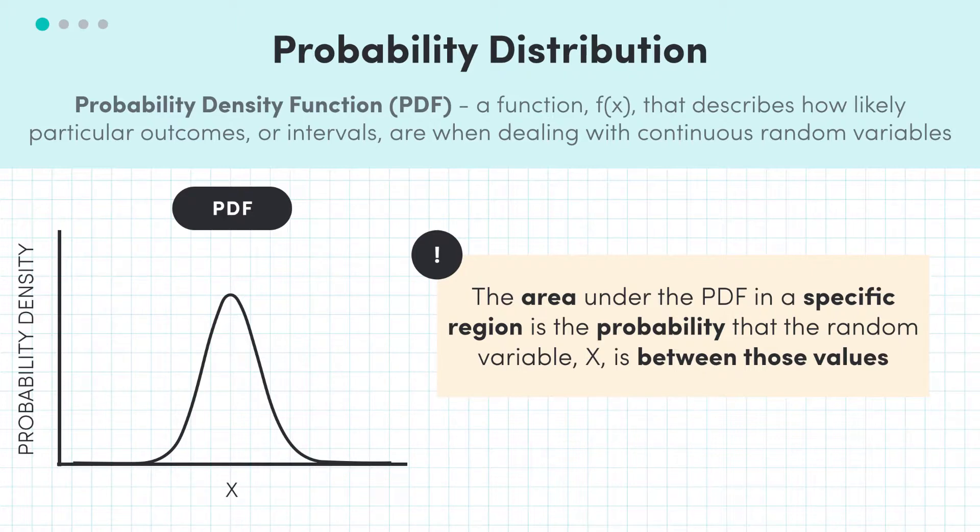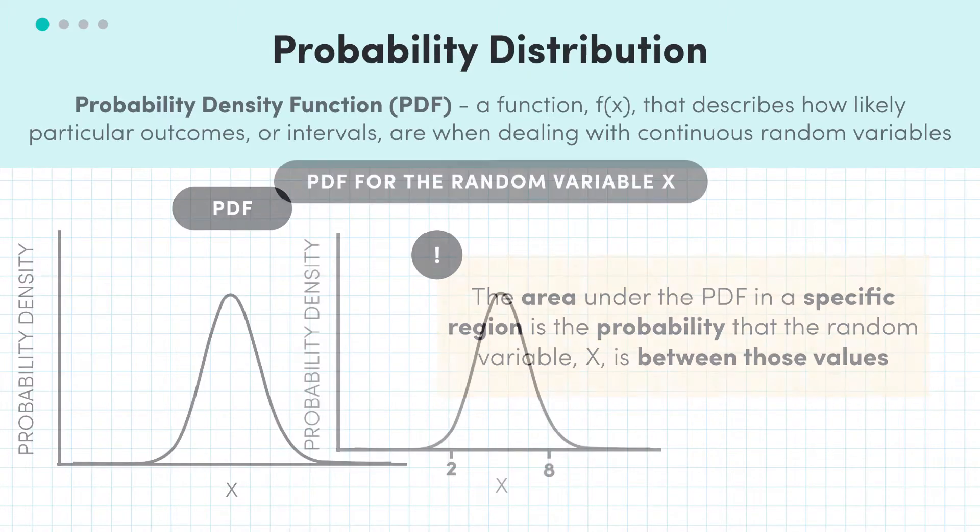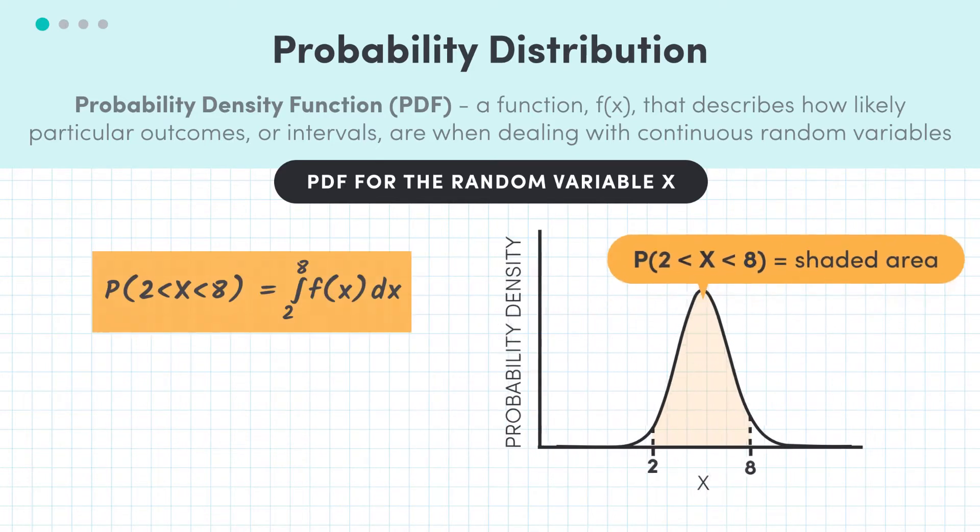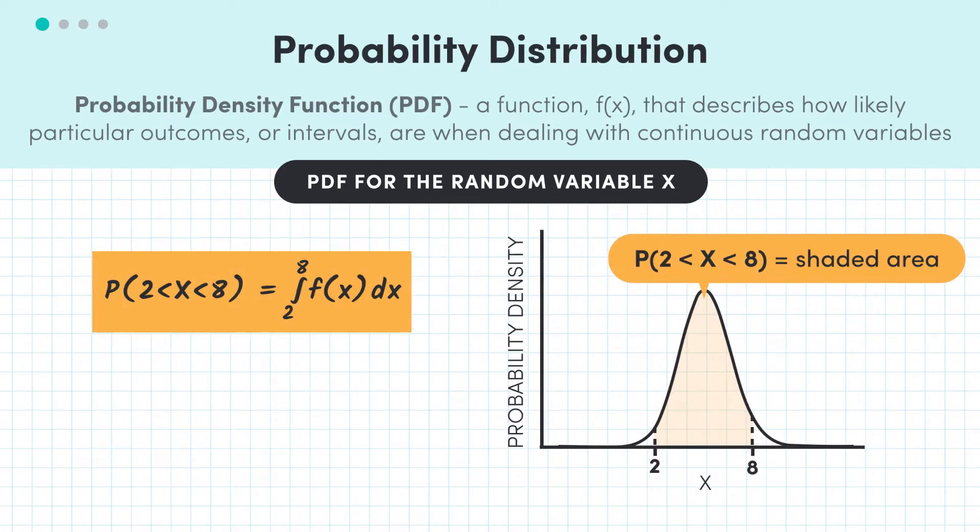So for example, say for a particular random variable X, the PDF looked like this. Then the probability that our random variable X is between 2 and 8 is exactly this area. So formally, the way that we would write that mathematically is like this, that the probability that X is between 2 and 8 is the integral from 2 to 8 of f(x) dx.